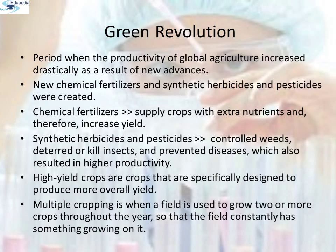What is the green revolution? The green revolution was a period when the productivity of global agriculture increased drastically as a result of new advances. During this time period, new chemical fertilizers and synthetic herbicides and pesticides were created. The chemical fertilizers made it possible to supply crops with extra nutrients and therefore increase yield. The newly developed synthetic herbicides and pesticides controlled weeds, deterred or killed insects and prevented diseases, which also resulted in high productivity. In addition, high yield crops were also developed and introduced, and multiple cropping was also implemented during the green revolution, leading to higher productivity.